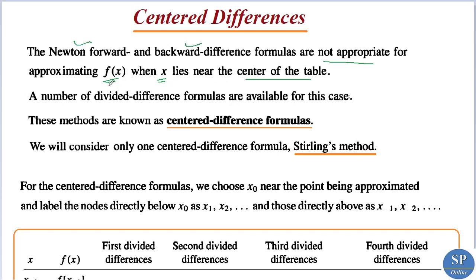To approximate the function f(x) when x lies near the center of the table, a number of divided difference formulas are available. These methods are called center difference formulas — the center difference formulas are used to approximate f(x) when x lies near the center of the table. Here we will consider only one center difference formula, which is Stirling's method, or Stirling's center difference formula.